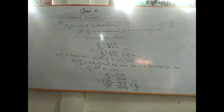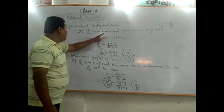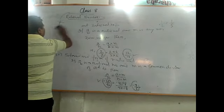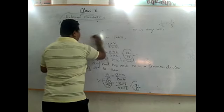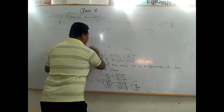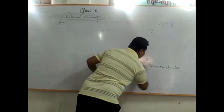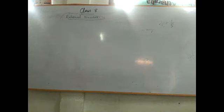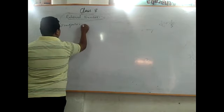So now we have seen equivalent rational numbers and the standard form of a rational number. Now we will see how to compare two rational numbers — that is, comparison of rational numbers, to determine which one is greater than the other.